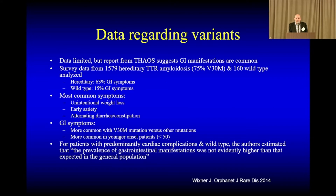In terms of looking at variants specifically, the Transthyretin Amyloidosis Outcomes Survey had done questionnaires and looked at symptoms with different variants. With a lot of the familial variants, particularly the neuropathic ones, GI symptoms in that context are probably about 60% approximately. But interestingly, if you look at the cardiac variants specifically without a lot of nerve involvement, the GI involvement for wild type was in the 15% to 20% range, and they actually went so far as to say that for that subset of amyloid, the prevalence of GI conditions was not higher than the general population.